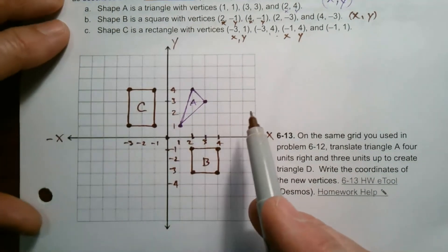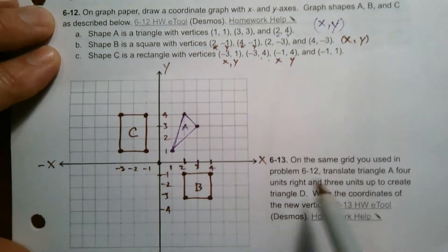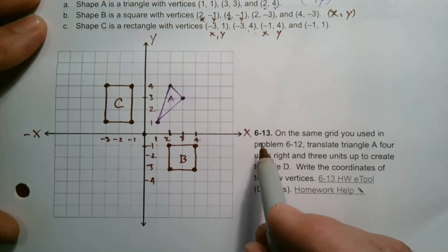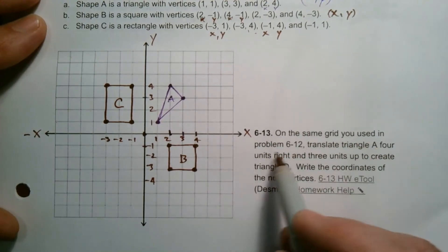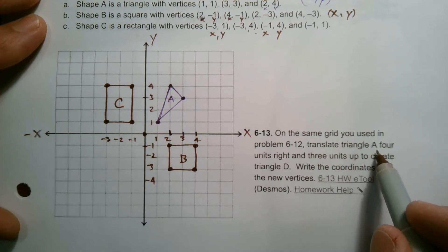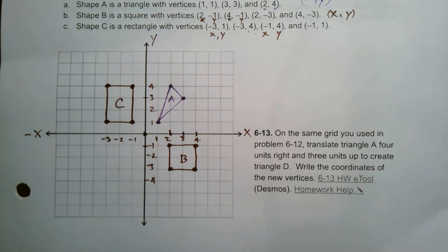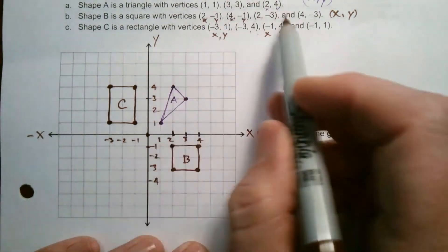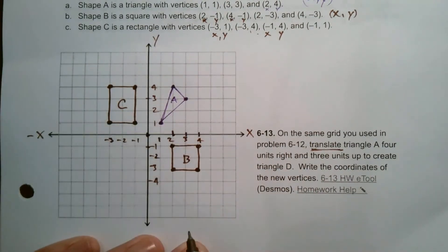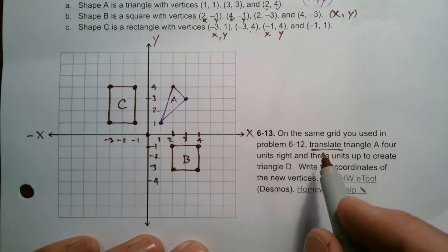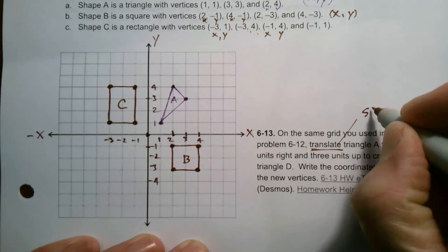So I've got my A, B, and C. That's 12. But I wanted to include 13 because it tells me to do something with this. So 13 says, on the same grid you used in problem 6.12, translate triangle A four units to the right and three units up to create triangle D. So this is now where we're going to do a translation, a rigid transformation. Remember, translate means slide.